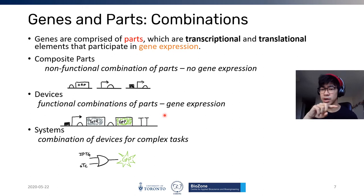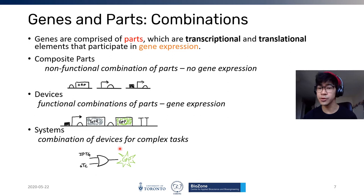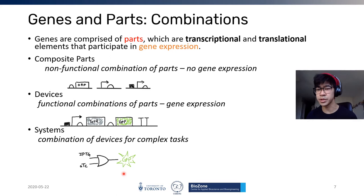Devices can be designed to work with each other. The Collins toggle switch is an example of a system where two devices repress each other depending on a chemical inducer. Another example is a logic gate where depending on the presence of IPTG or ATC, a certain reporter like GFP is produced. This is useful for environmental sensing — for instance, if you want to detect two signals simultaneously you'd use an AND gate to produce GFP, indicating the presence of copper and toxic pollutants in water.